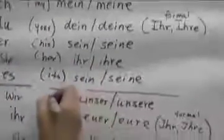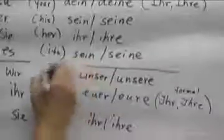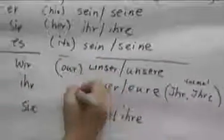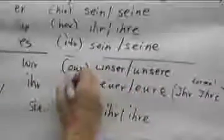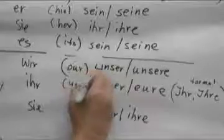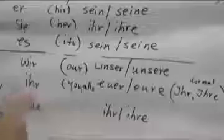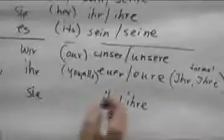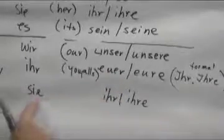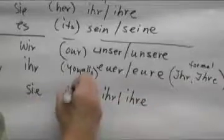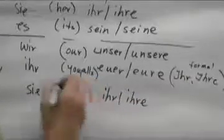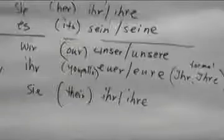Wir, unser is our. Ihr, euer, eure is you all. That word doesn't really exist, but it makes it pretty clear that it's more than one person we are talking about. And ihr, ihre, based on they would be their.